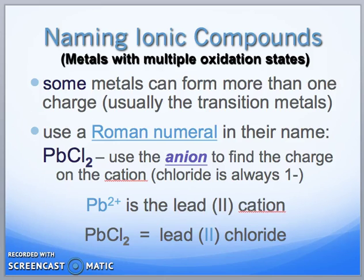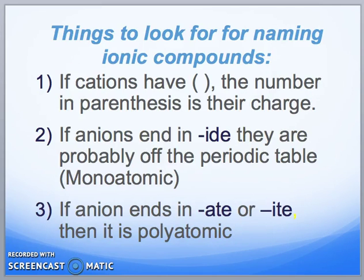When naming ionic compounds using Roman numerals, it's the same idea. For example, lead(II) chloride is PbCl₂ — the 2 came from the lead, and Cl has a minus 1 charge. There are three things to look for: if cations have Roman numerals in parentheses, that number is their actual charge. If anions end in '-ide,' they are monoatomic from the periodic table. If anions end in '-ate' or '-ite,' then they are polyatomic. Good job — you've gotten through the first two sections of Chapter 9.